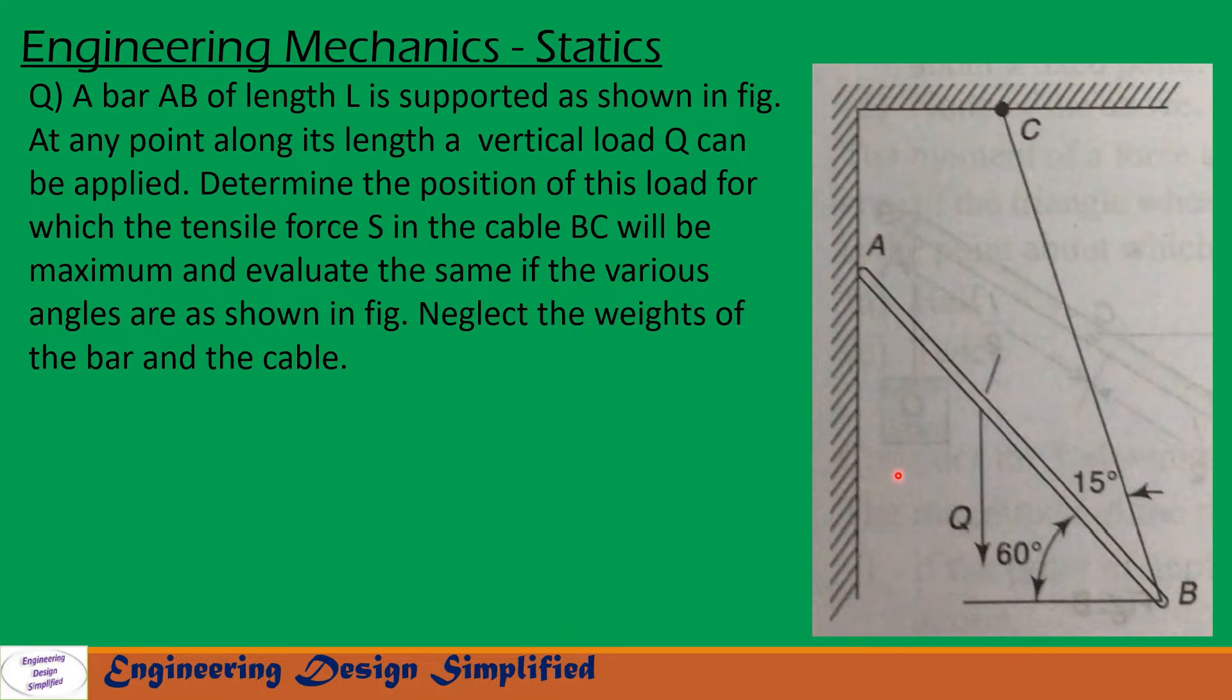In this problem given is a weightless bar AB of length L, one end of the bar is held on this vertical wall and at other end a cable BC is attached like shown in figure. So the angle between horizontal and this bar is 60 degrees and angle between this bar and this cable is 15 degrees. So the weight Q can be attached at any point along length AB. So in order for the tension S in the cable to be maximum we need to find the position of Q along AB. Let us see in the coming slides how to solve this problem.